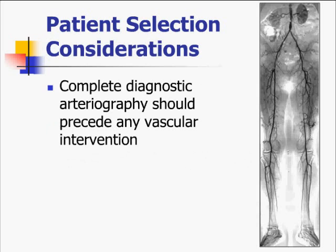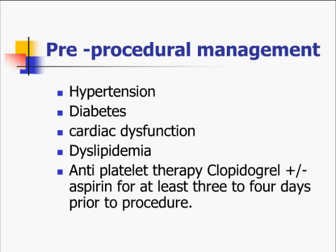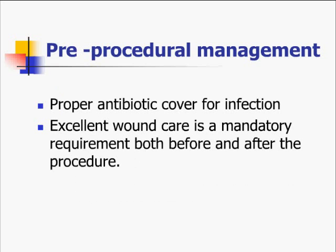An angiogram extending from the bifurcation all the way to the ankle should be performed. It is also important to consult a surgeon to ensure that whatever we do does not make it impossible for surgery later. Pre-procedural management should ensure diabetes and hypertension are controlled, cardiac function is evaluated, smoking is stopped, dyslipidemia is controlled, and the patient is on antiplatelet therapy. Proper antibiotic cover and excellent wound care are also necessary.